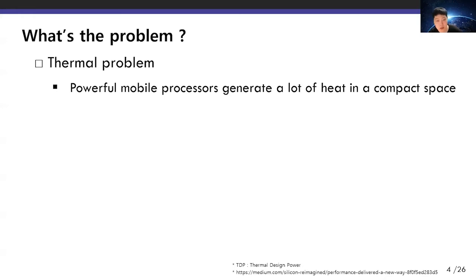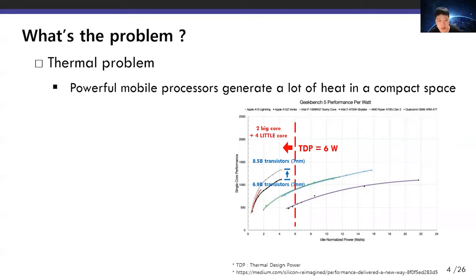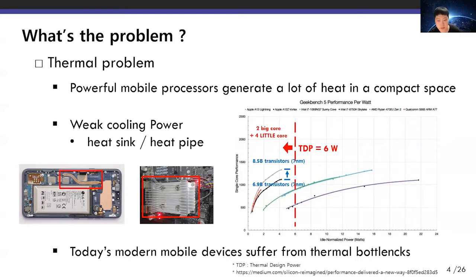The first obstacle is overheating. The graph shows the performance per watt. The A13 improved peak performance by increasing the number of transistors compared to A12. Unlike laptop processors with sufficient TDP, they both have a TDP of only 6W. Considering they have two big cores and four little cores, 6W is a very tight budget. The performance of mobile processors increases, but it is hard to fully utilize the processor capability due to the TDP limit. Mobile devices have low TDP because they do not have substantial cooling methods such as a fan; instead, they depend on heat sinks or heat pipes to dissipate heat. This is why today's mobile devices suffer from thermal bottlenecks.